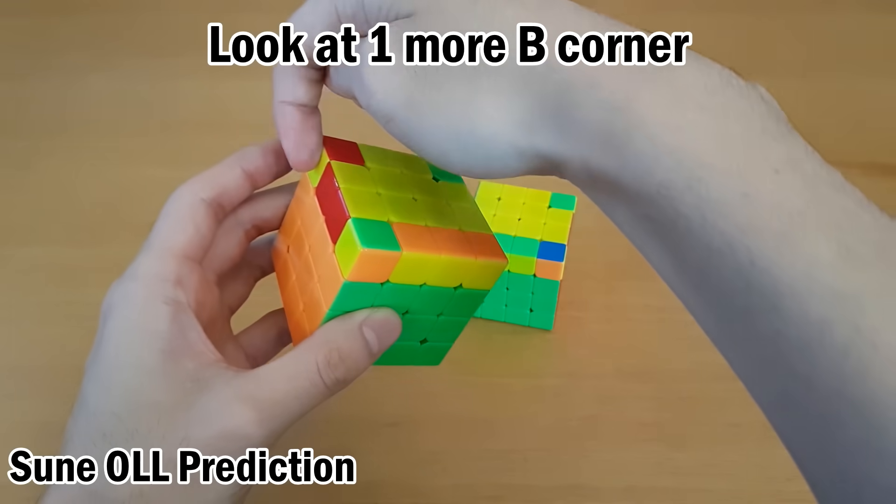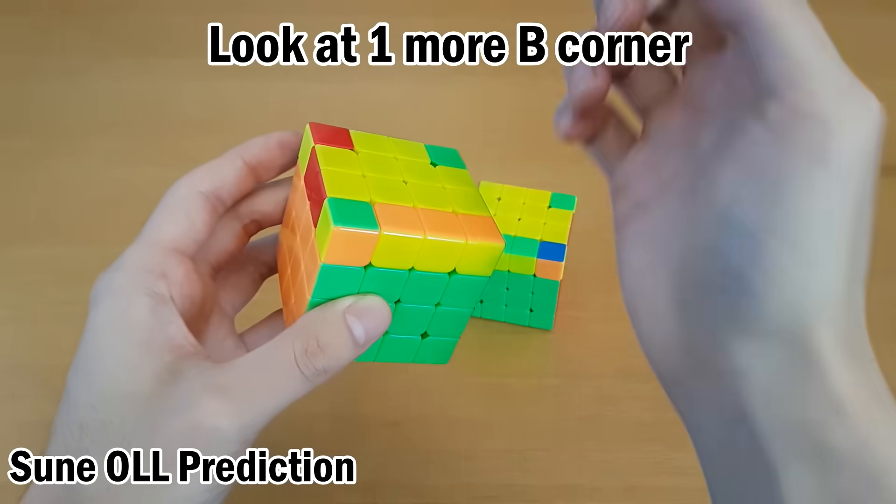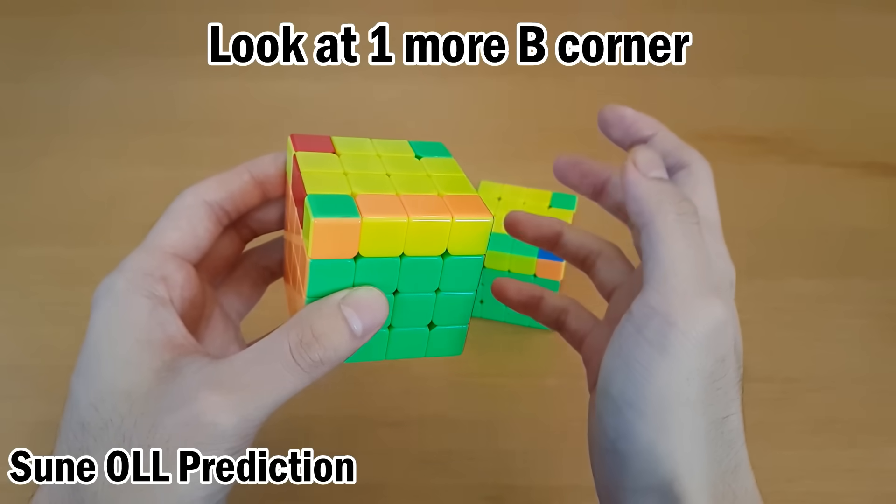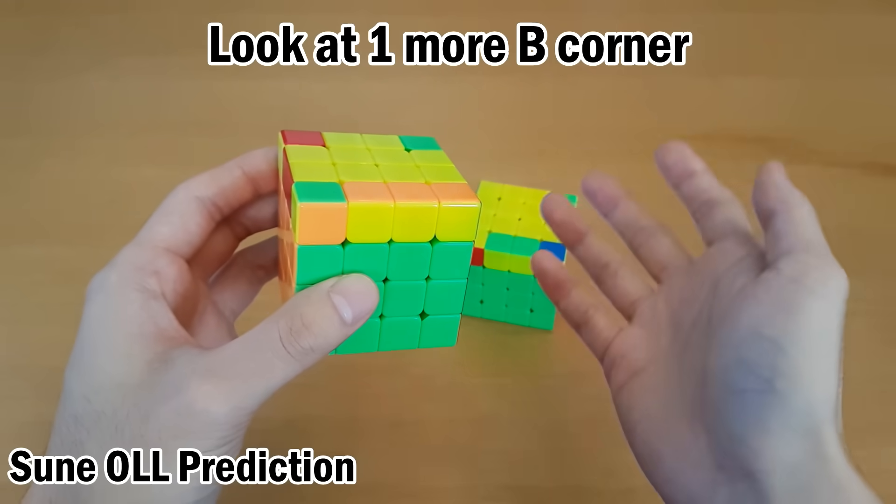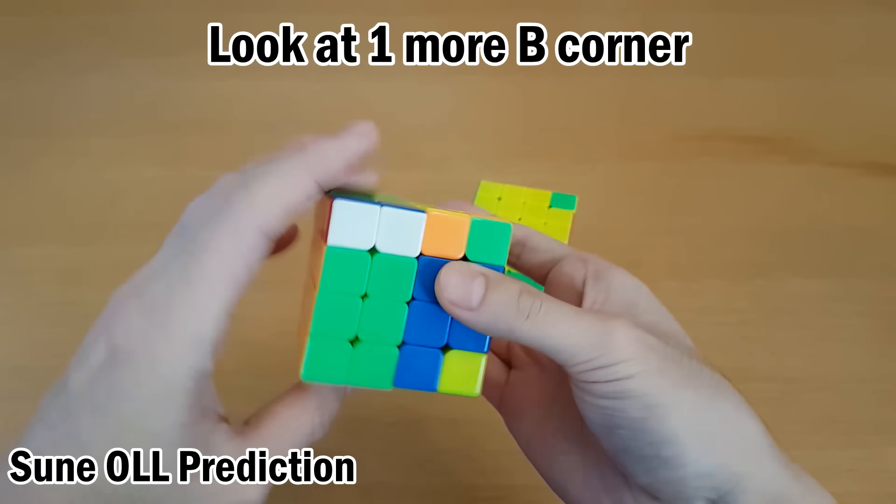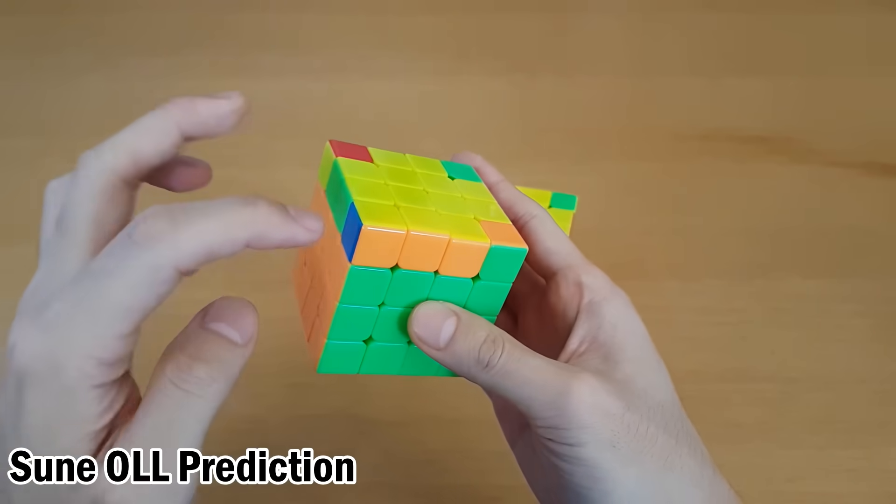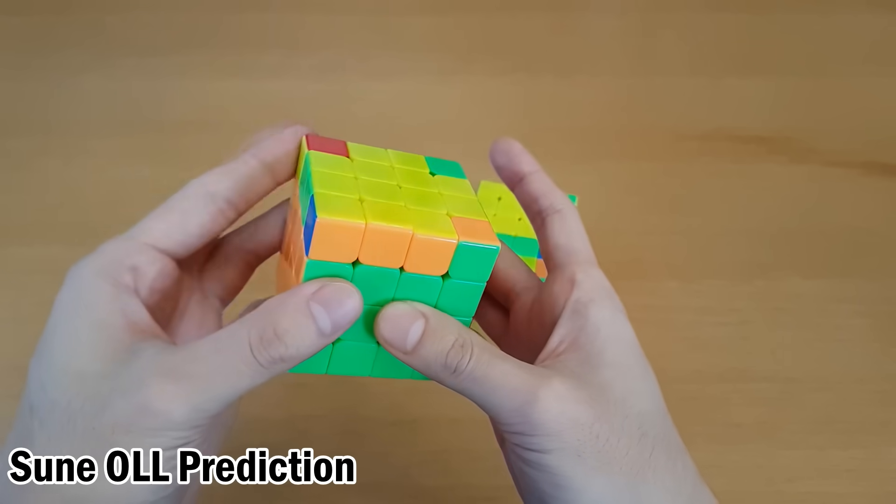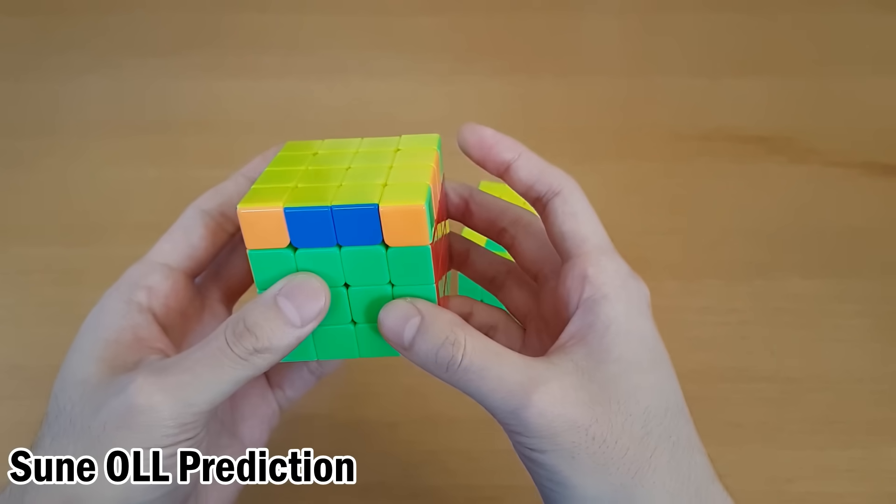From this and this, all you have to look at is one other corner, you can figure out exactly what OLL it's going to be. Because you know it's going to be some sort of soon or anti-soon case, and you only have to know one other corner to be able to know exactly what it's going to be. So once you do the OLL Parity algorithm, this is what I predicted. So you can go straight into the algorithm.